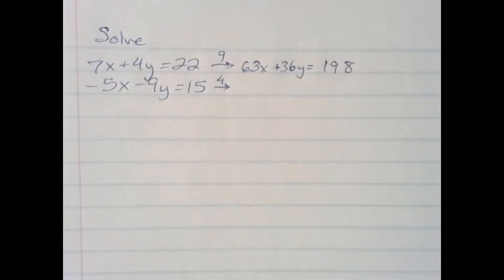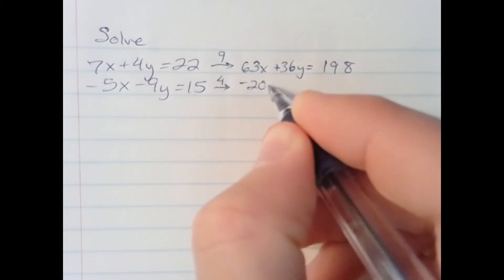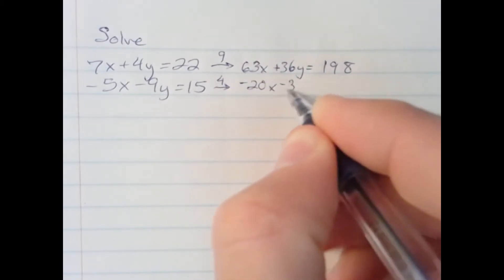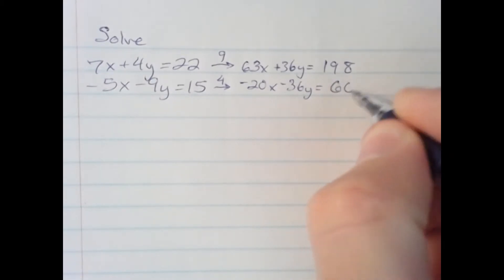On the bottom, we're going to have negative 20x minus 36y, and 15 times 4 is 60.